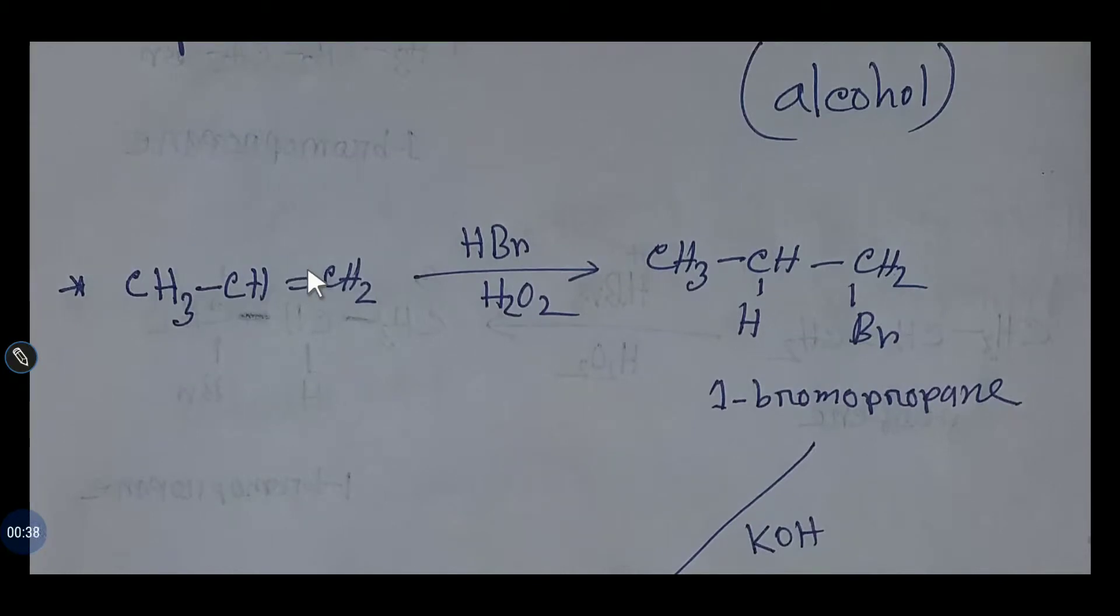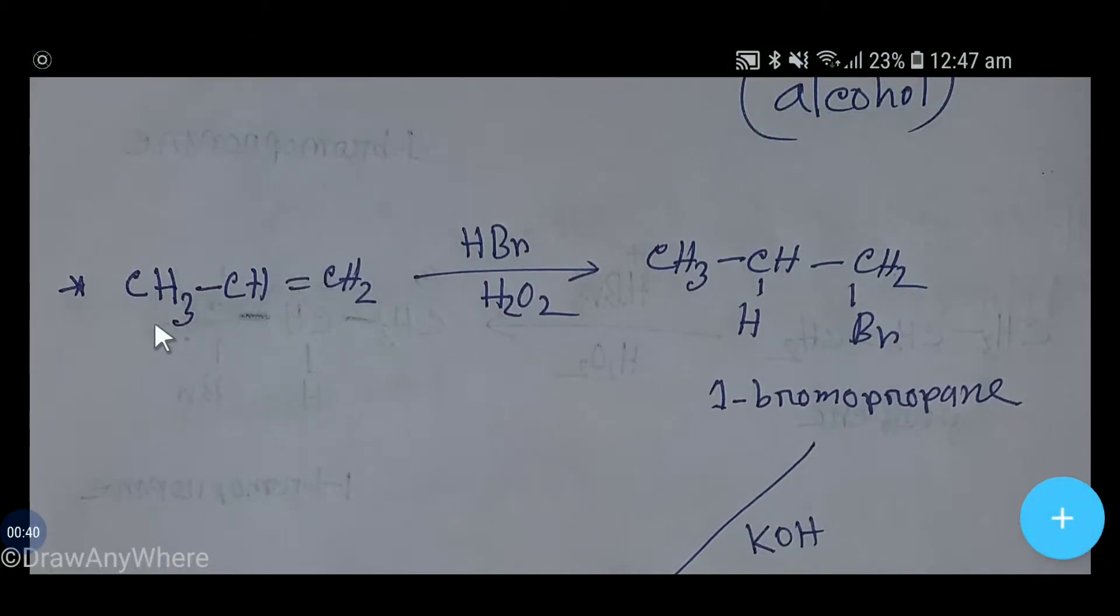This is propane. If you add hydrogen bromide here - hydrogen is positive and bromine is negative - hydrogen bromide in the presence of hydrogen peroxide reacts with propane and we get 1-bromopropane.